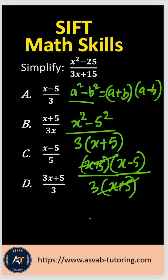So this x plus 5, x plus 5 cancel out. So that gives you x minus 5 over 3.